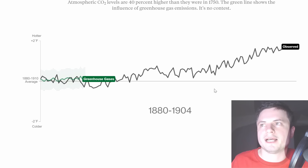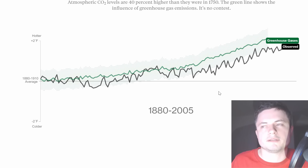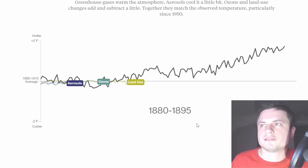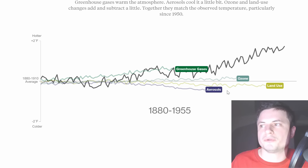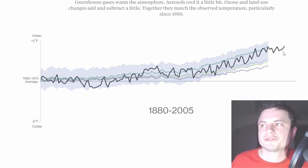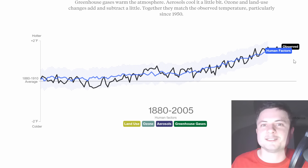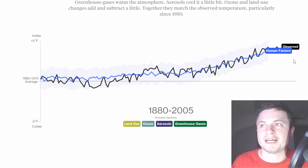So what if we look at the big one — greenhouse gases? Interesting: this line seems to actually correspond. And what if we combine all of them — aerosols, ozone, deforestation, and greenhouse gases? These are called human factors. Look at that line — it's almost exactly the same as the observed temperature. That is kind of scary. You can make your own conclusions here.